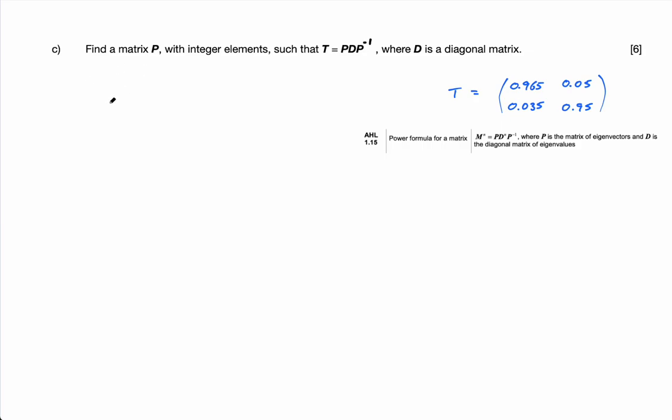So what we need to do is find the eigenvectors. If you remember, to find the eigenvectors we had to do this. If you don't know what I'm doing here, you've got to go back and watch the lesson because it won't make any sense at all, but I'm going to assume you have watched the lesson. So we're going to do 0.965 minus lambda, 0.05, 0.035, 0.95 minus lambda. The determinant of this must equal 0.